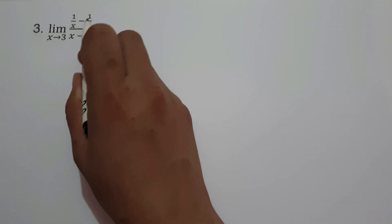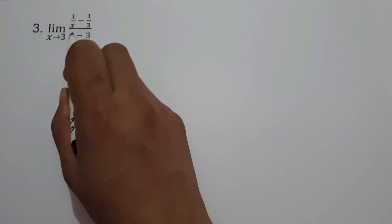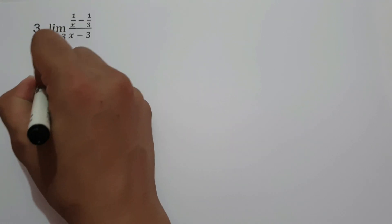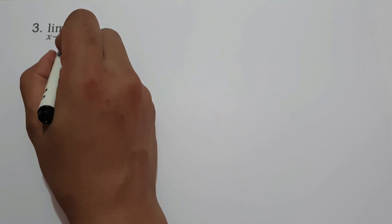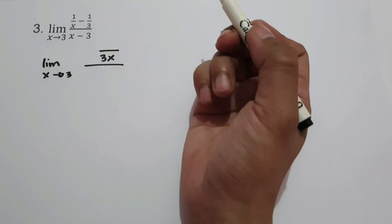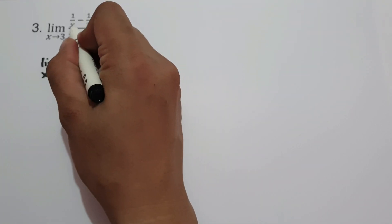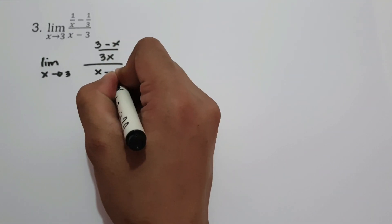On example number 3, what is the limit of 1 over x minus 1 over 3, all over x minus 3, as x approaches 3? If we substitute directly the value of x, we are going to have 0 over 0. So let's have the limit as x approaches 3, and let us find the LCM of x and 3, which is 3x. Then let's do some cross multiplication: 3 multiplied by 1 is 3, and x multiplied by negative 1 is negative x. And let's write x minus 3.